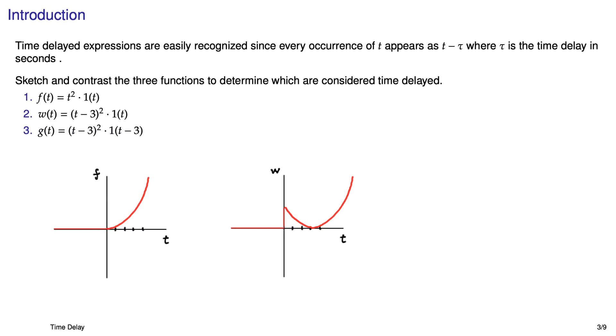But because the step kicks on at t equals 0, the annihilation of the function happens for t less than 0. So we're picking up part of the parabola that you would normally see for negative time. The last one of course is a straight up pure time delay. The signal that we had in equation one is just shifted by three seconds and every occurrence of t in equation one is just replaced with t minus 3.